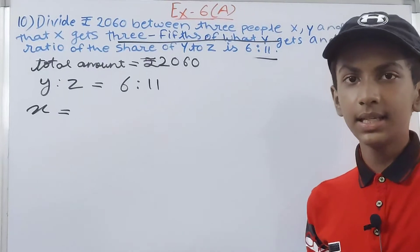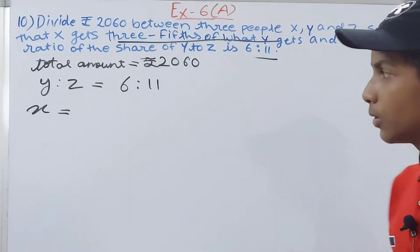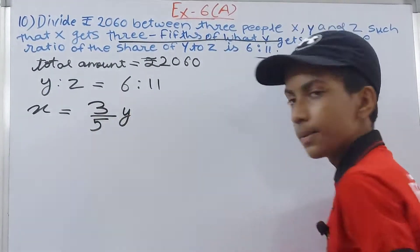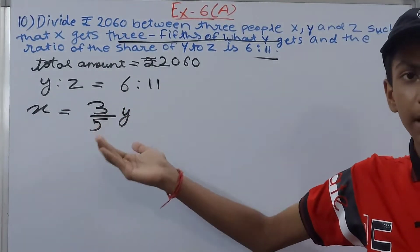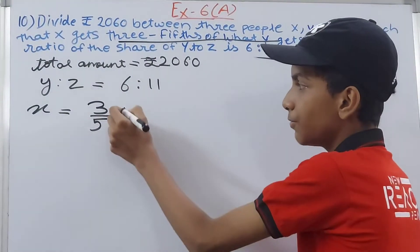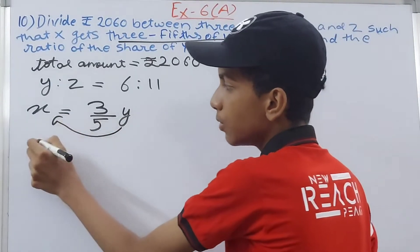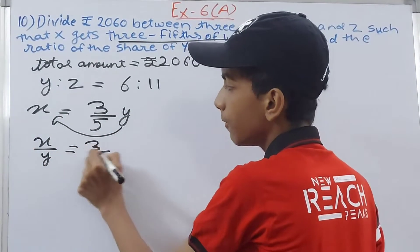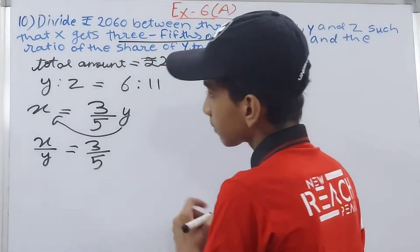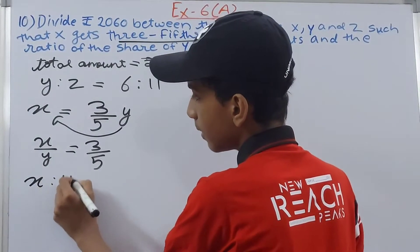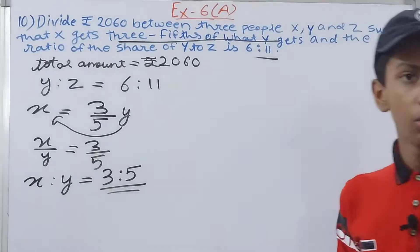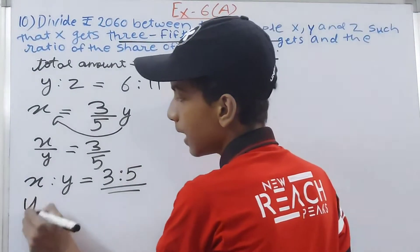To find X's ratio, we know X gets three-fifths of what Y gets. Let's say Y gets Y amount. Then X equals three-fifths of Y, which is 3/5 × Y. We can write this as X upon Y equals 3 upon 5. Therefore, X is to Y equals 3 is to 5. We already know Y is to Z equals 6 is to 11.